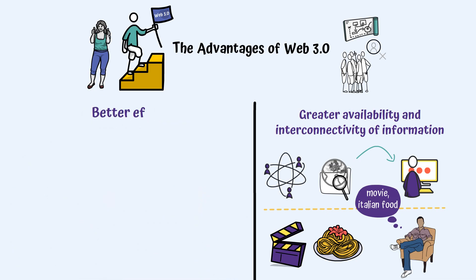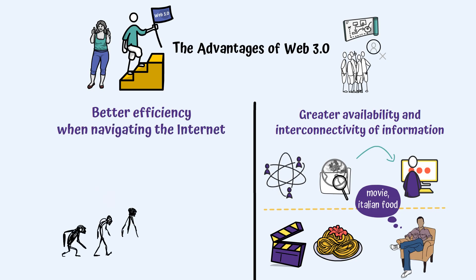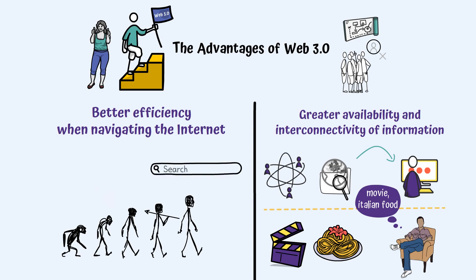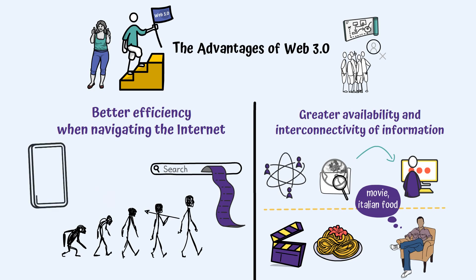Better efficiency when navigating the internet: the evolution we've experienced in recent years has made search engines more efficient when it comes to displaying relevant results. Still, some of the used systems, like the ones for social tagging, can still be influenced. With the help of Web 3.0 and improved algorithms, the artificial intelligence should be able to filter even the manipulated results and offer the user impartial answers.